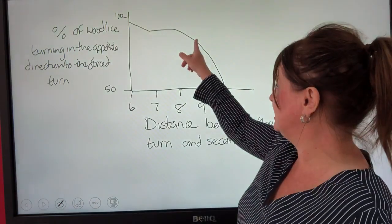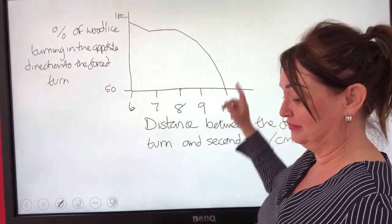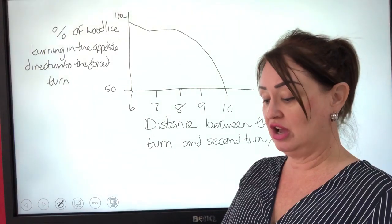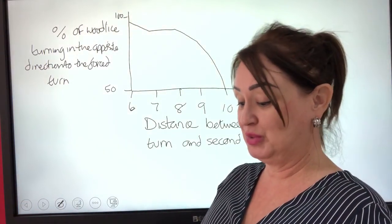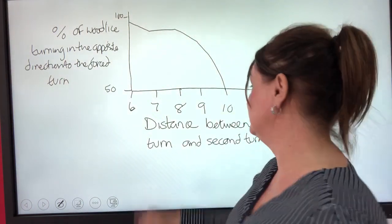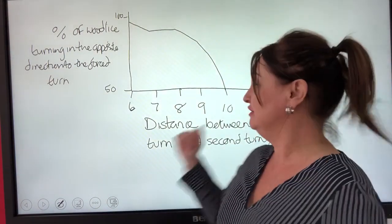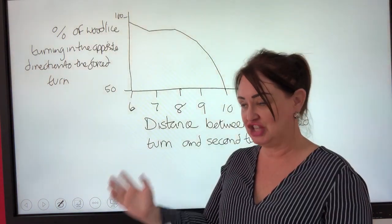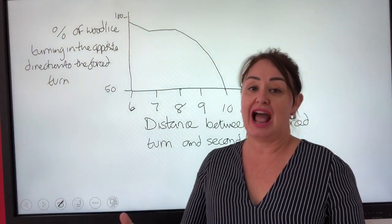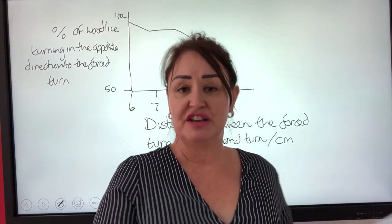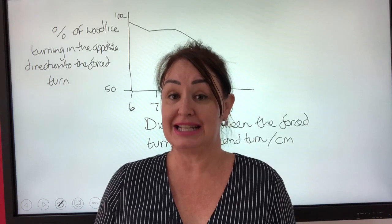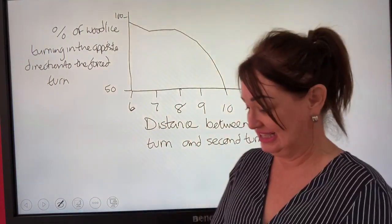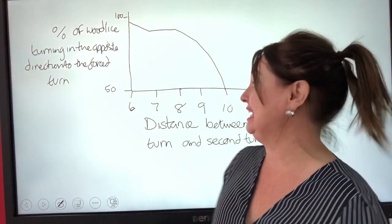The next part of the question asks: can you conclude that woodlice show turn alternation behaviour when the distance between the forced turn and the second turn was 10 centimetres? After 10 centimetres, 50% turn left and 50% turn right. We cannot conclude that they show turn alternation, because a 50-50 split is only what we would expect by chance given 100 woodlice — half would turn left and half would turn right. So we cannot say there is turn alternation behaviour in the woodlice.